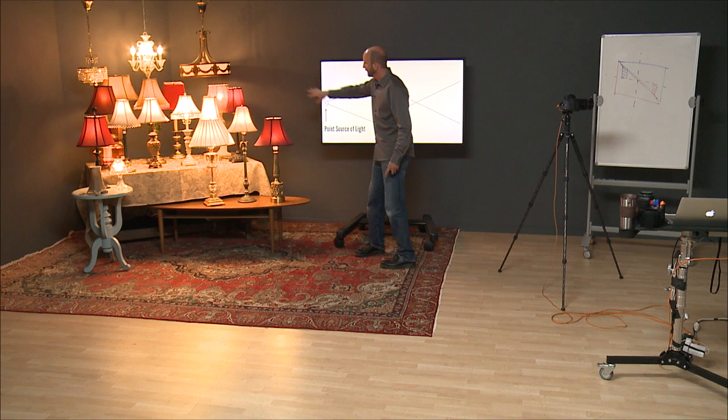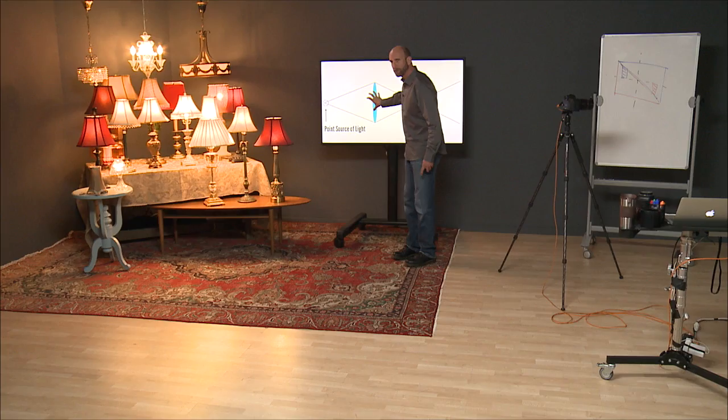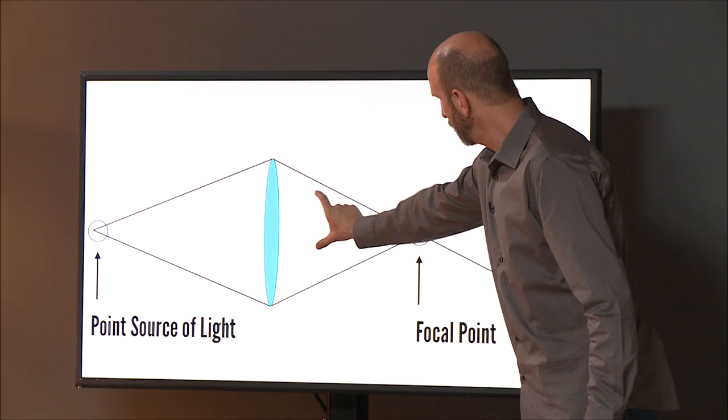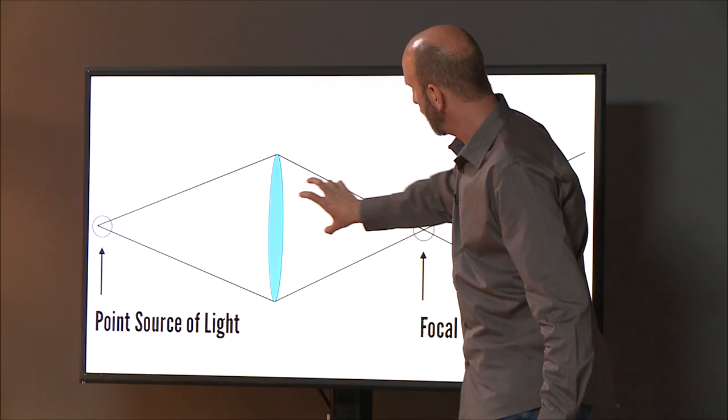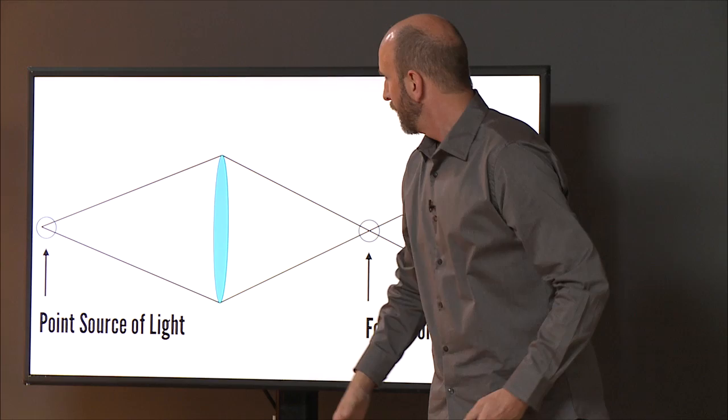And how that works in a camera is a point source of light, like those little things, it actually expands and when the lens captures that, the lens is going to focus that point source of light over here. And where these two, where that cone of light converges, that is called a focal point. So where this expands, it comes back, this is called the focal point, and then it just keeps going. That light just keeps going.